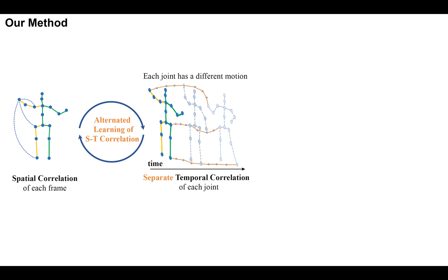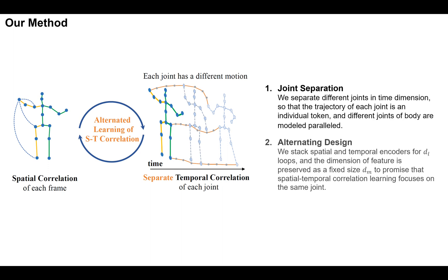We propose MixSTE, which consists of two modules: joint separation and alternating design. In particular, we separate different joints in the time dimension so that the trajectory of each joint is an individual token, and different joints of the body are modeled in parallel. We stack spatial and temporal encoders for D loops, and the feature dimension is preserved at a fixed size to ensure that spatio-temporal correlation learning focuses on the same joint.